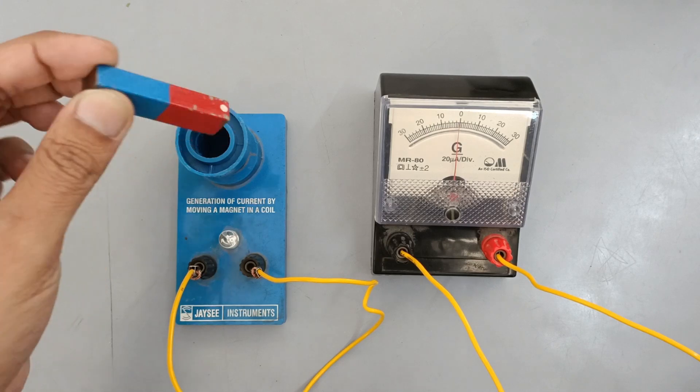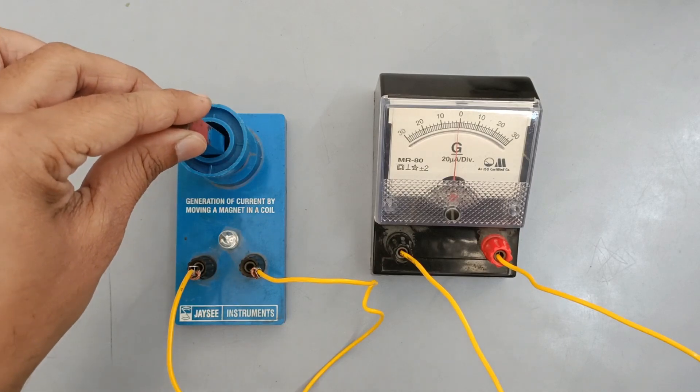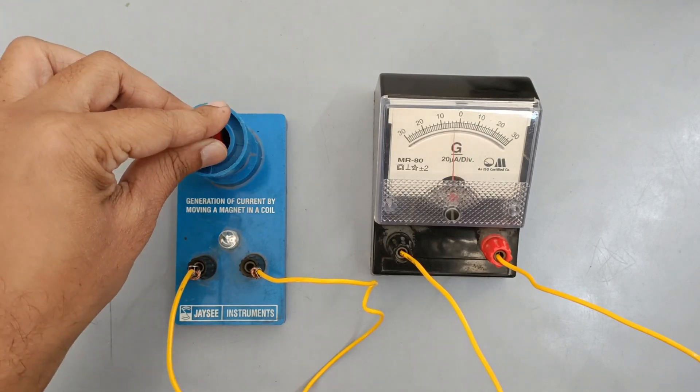On reversing the pole of the magnet facing the solenoid and moving the magnet into the solenoid, the direction of current reverses compared to the previous case.